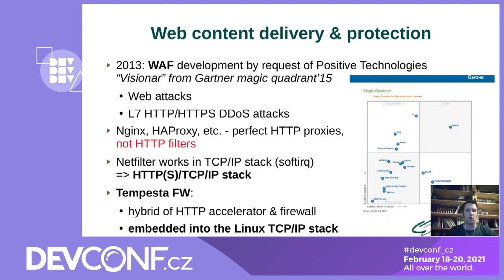During that project, we realized that while modern HTTPS proxies are good for content delivery, they were never designed for filtration of massive malicious HTTPS traffic. And while we have an excellent firewall in the Linux kernel for TCP and IP protocols — NetFilter — why not extend TCP/IP with HTTPS and get a similar firewall for HTTPS? And this is how we came to the Tempesta FW project.